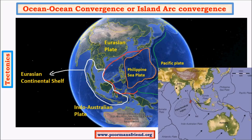The formation of Indonesian islands was mainly due to the interaction of the Indo-Australian oceanic plate and the Eurasian continental plate. Though the Sunda plate appears to be in the sea, it is part of the continental shelf of Eurasia and can be considered a continental plate. During this interaction, island arcs are formed, and as this process continues for millions of years the island arcs extend, giving rise to the huge chain of volcanic islands we see in the Indo-Asian archipelago. Likewise, the Philippine archipelago was created mainly by the interaction between the Philippine plate and the Eurasian plate.